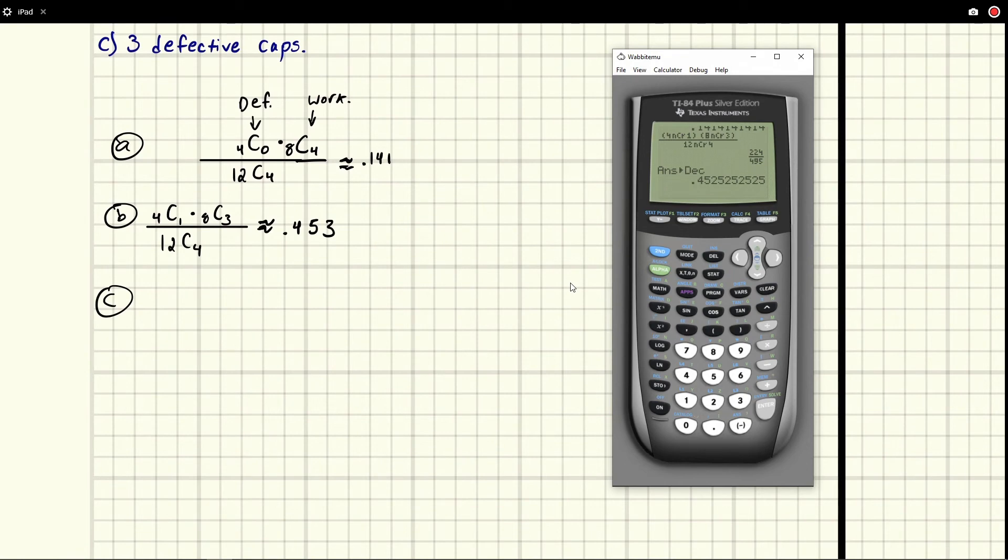And technically, these are approximately if you want to be really honest about what you're doing. And then we've got C, which is three defective capacitors. So we put that down, we already know this is our sample space, there's 12 caps total, we're picking four of them. And then we've got three defective ones. So that's 4 choose 3. So notice that the chance of picking one is pretty high because there's four of them getting one of them, pretty good chance of getting that. Let's see how it fares with three.